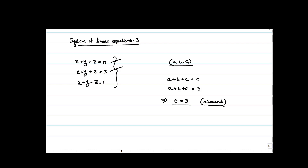But this is absurd. So there cannot exist any point which satisfies both the first and second equations, and therefore there cannot exist any point which satisfies all three equations. Clearly, this system of linear equations has no solution.